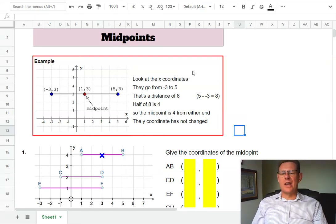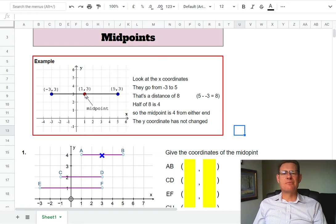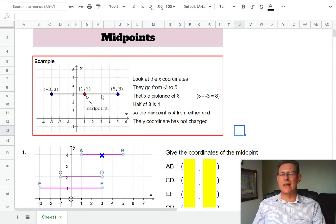We're looking at midpoints in this video, and you can see from this example that the red dot is right in the middle of the line. If you count carefully, you'll find there's eight squares for the length of that line, so it's four from the left or you can go four from the right, go backwards and you get the value of one for the x coordinate.